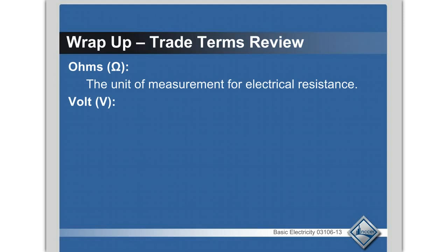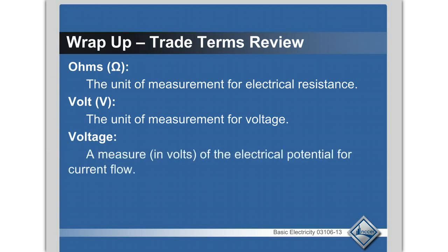Volt — V. Can you remember which alphabetic symbol is used for volts in Ohm's Law? Volt is the unit of measurement for voltage, and E is your Ohm's Law symbol.